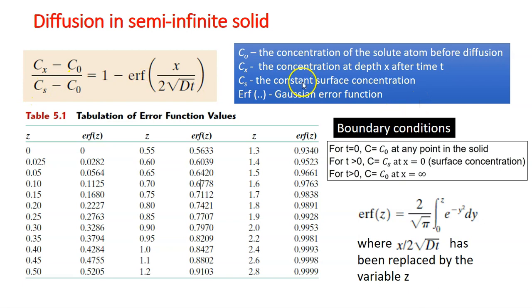And the CS is the constant surface concentration, the surface concentration of the solute, which is the CS. And this thing here, ERF and whatever in this bracket, we call this as Gaussian error function.